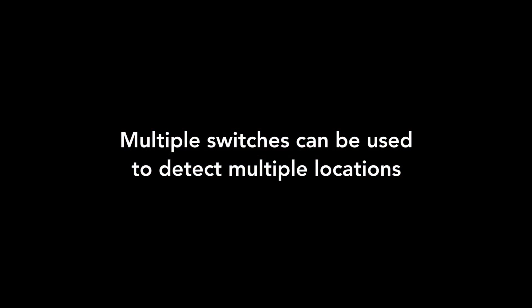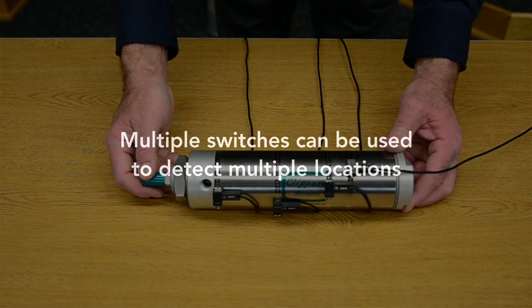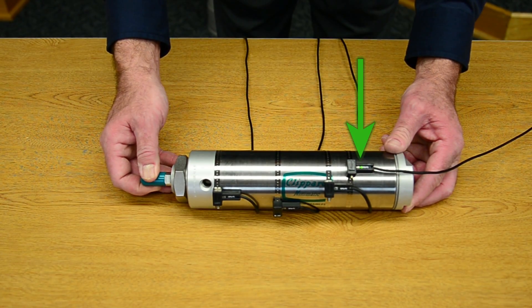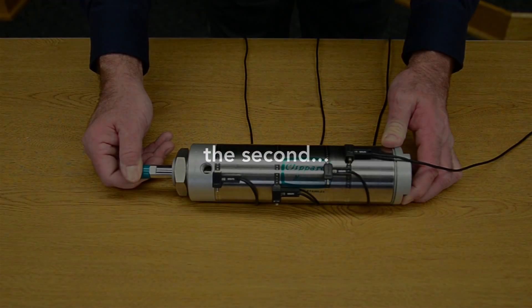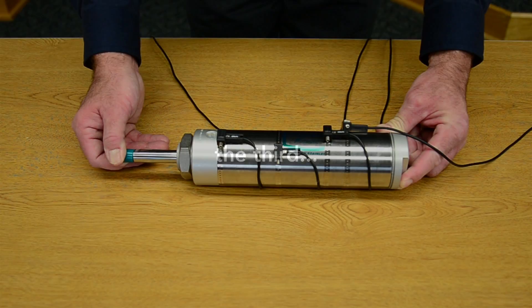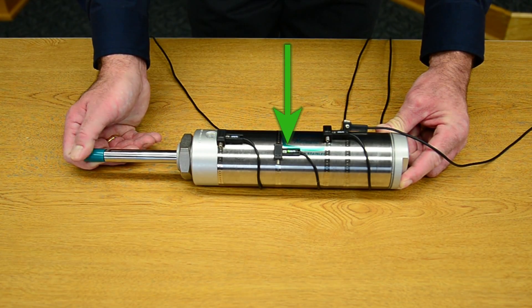Multiple switches can be used to detect multiple locations. Here you can see the LED indicates that the magnet is under the first switch. Then the second switch. Then the third switch. And finally the fourth switch.